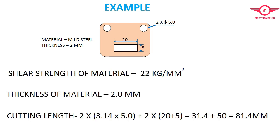Let's take an example to calculate all these equations, where material is mild steel having shear strength 22 kg per mm square and thickness is 2 mm. As we see in the picture, there are two holes and one slot to cut, so we need to calculate the total length of cutting.